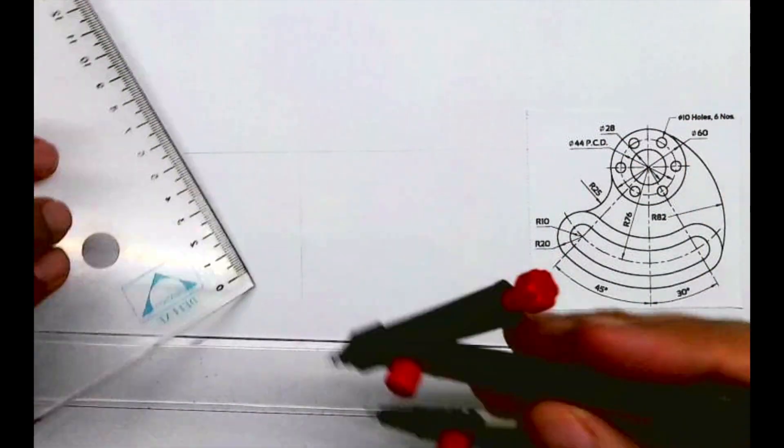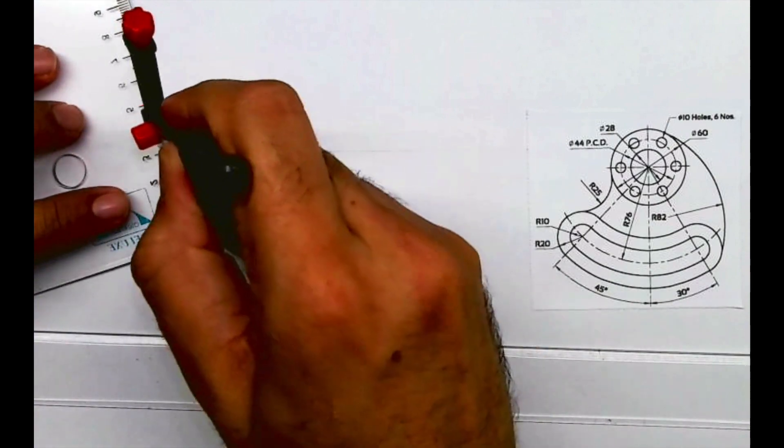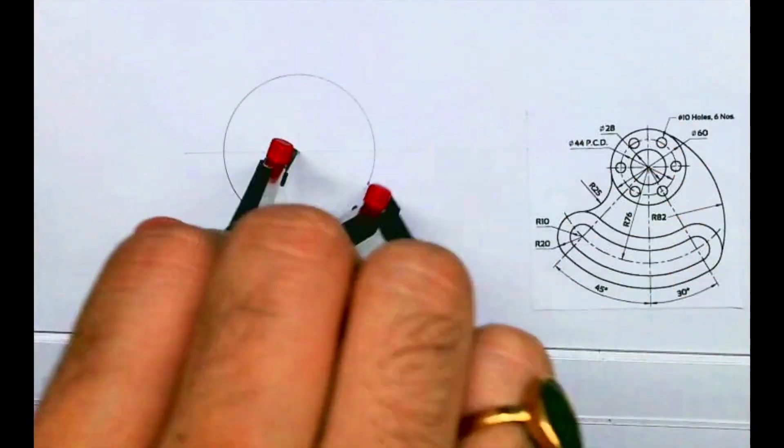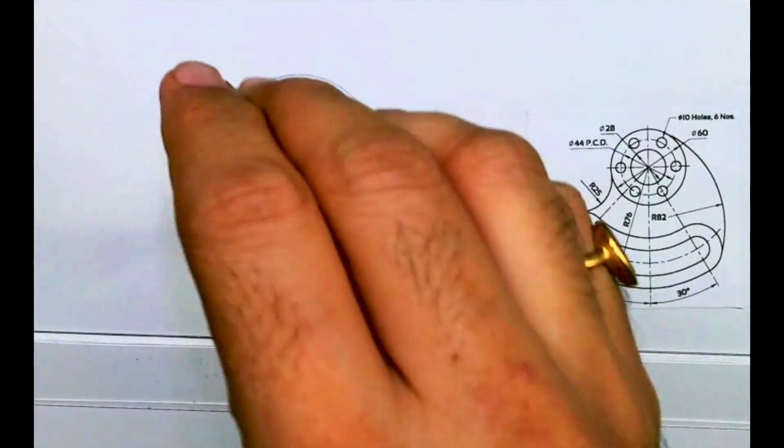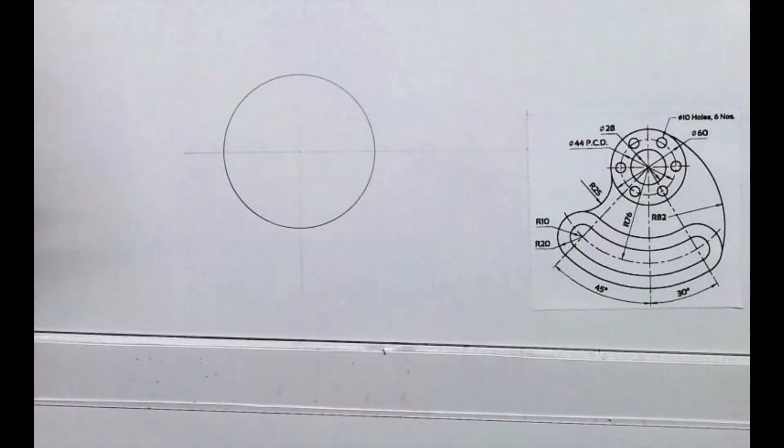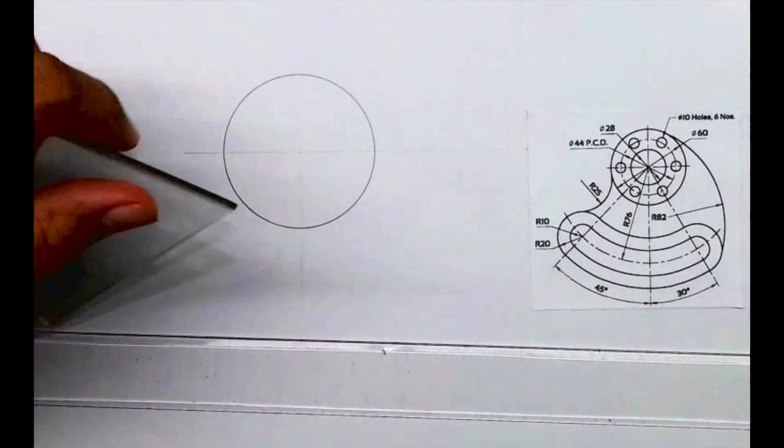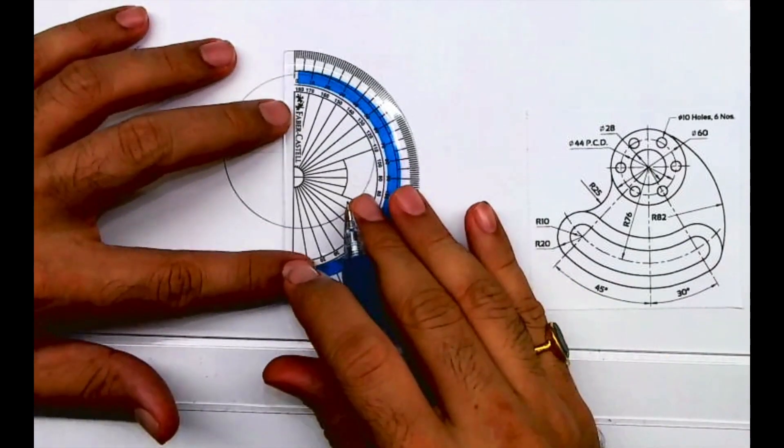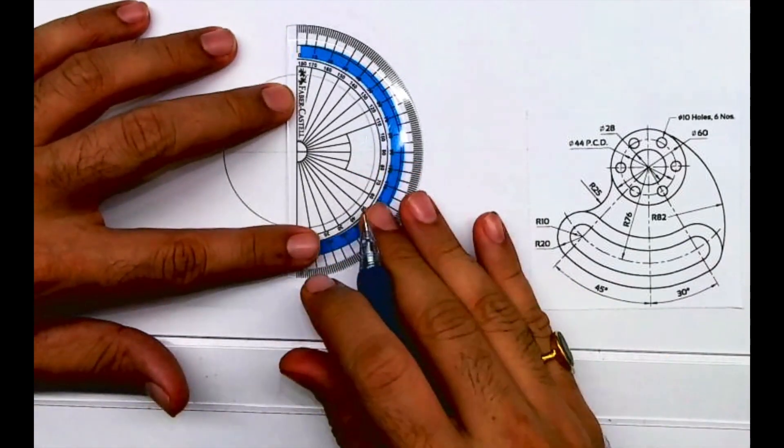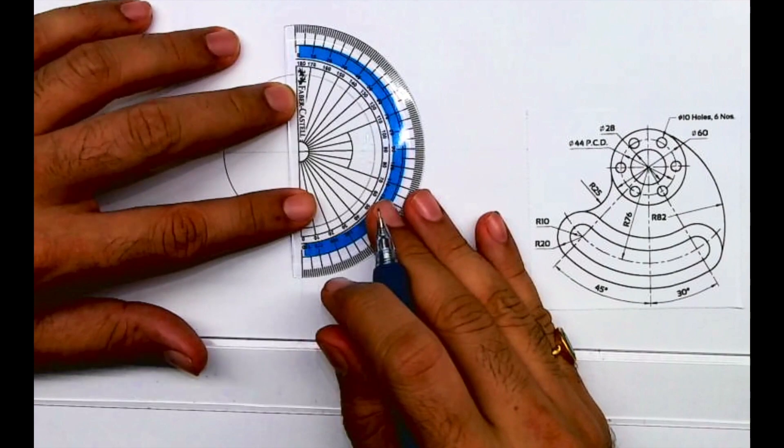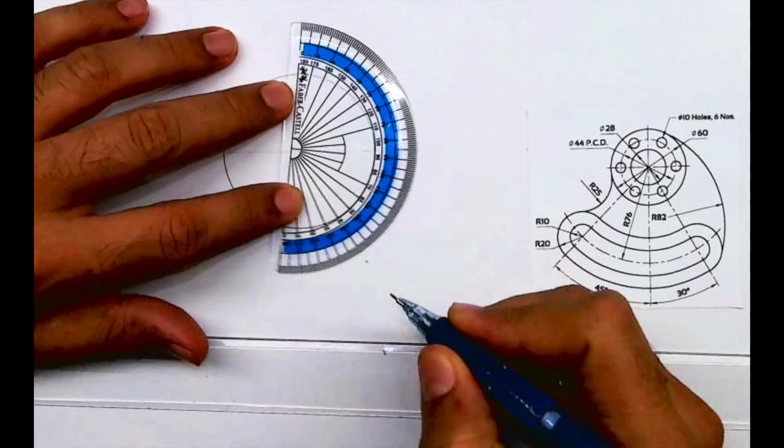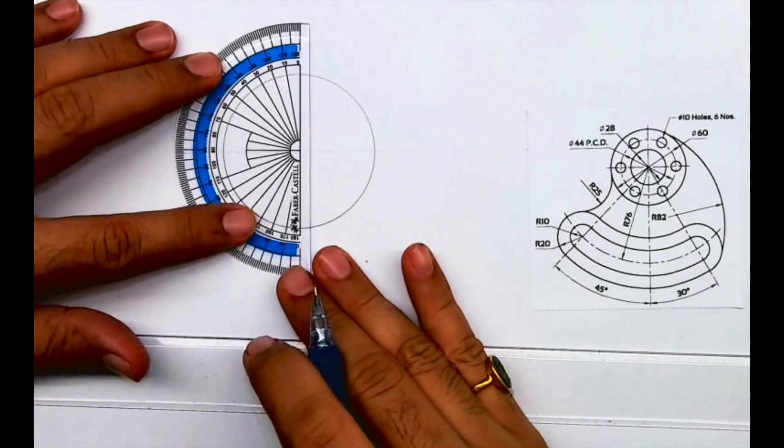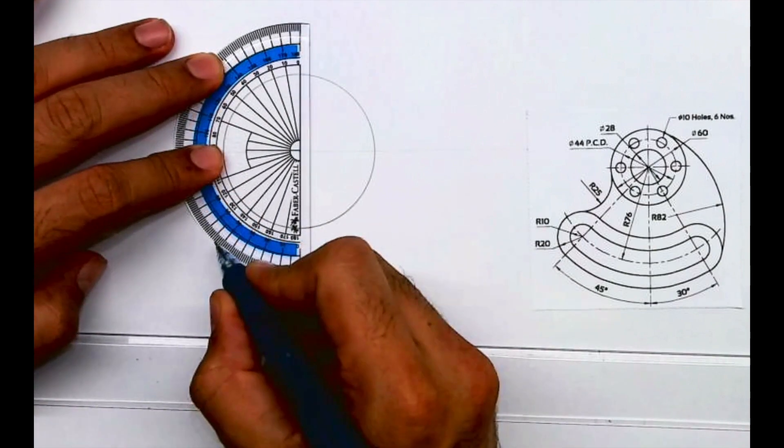Because diameter is 60, then we have to draw this angle. One is 30 degree and other is 45 degree. So remember, now we have to take angle with vertical, so we have to keep protractor like this and we have to mark angle.